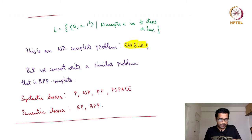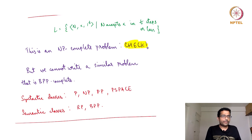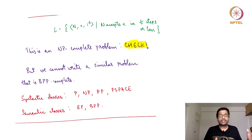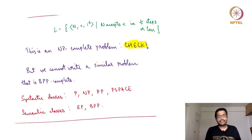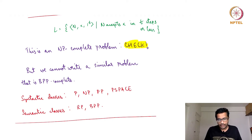This brings us to the classification of syntactic and semantic classes. Syntactic classes are those for which, when you give a Turing machine representation, the Turing machine automatically corresponds to a language. For P, NP, etc., given a Turing machine that runs in deterministic polynomial time, there is a language associated with it. Whereas for RP and BPP, given a Turing machine, it is not clear whether it is an RP or BPP decider. Semantic classes are those for which a Turing machine by default need not be a decider for that class.